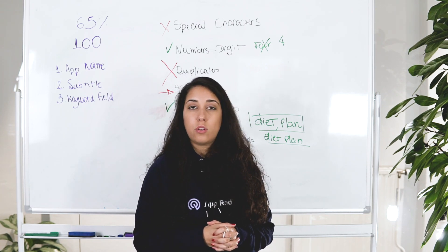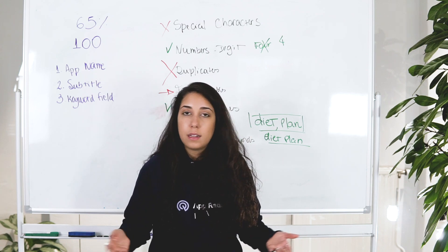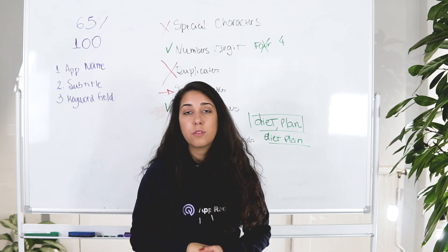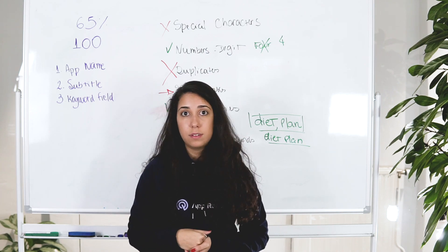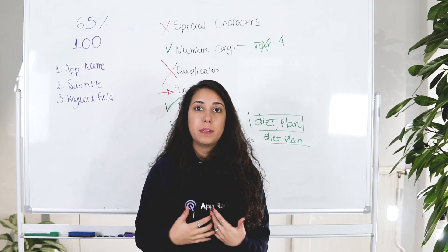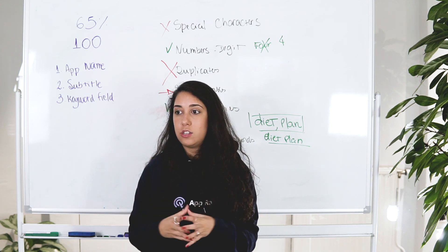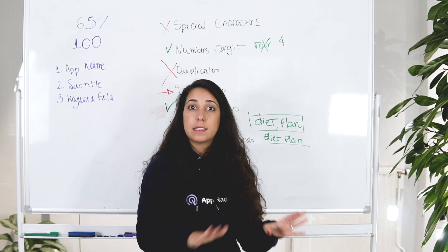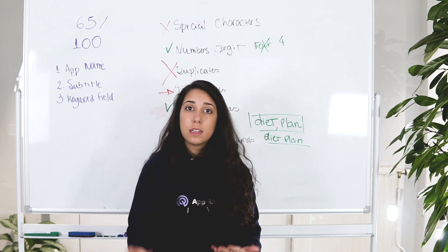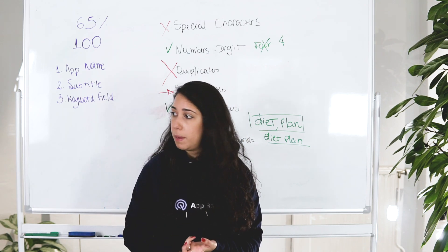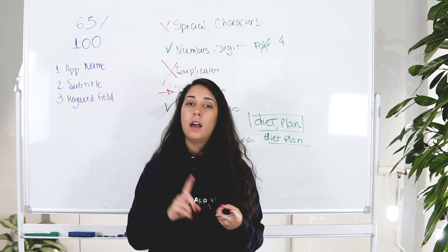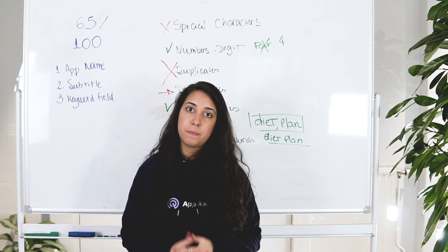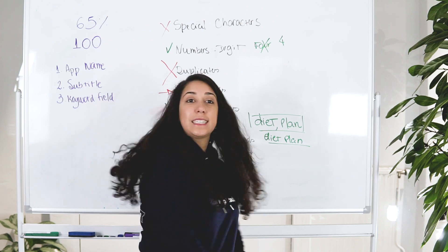With AppRator you can track your keyword rankings daily, then check after a month and do an update — move keywords around. There's always one or two keywords to add or remove. Keywords you're not ranking for at all and haven't for a while are just taking space from good keywords — definitely remove those. Keyword optimization is an ongoing process, just like your app: you keep making it better, adding features, updating, fixing bugs.